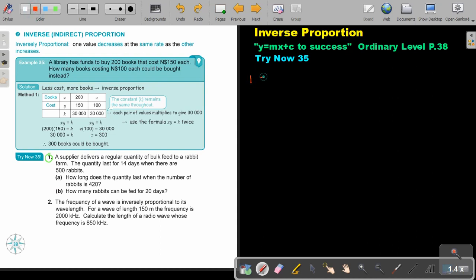I like always to just write, what are the two things? They are talking about rabbits and they talk about days. We can call this X and this Y. So it's rabbits, 500 rabbits, and it's going to last 14 days. If I want to find that bulk quantity, I'm going to say XY equals K. So taking that 500, multiplying it with the 14, that will give me the value of K. So I will find that the value of K is 7,000.